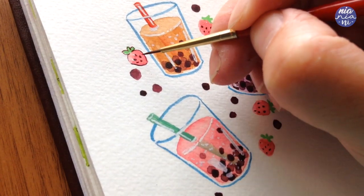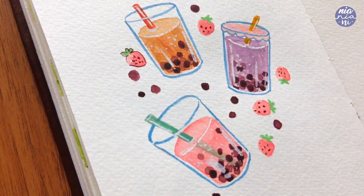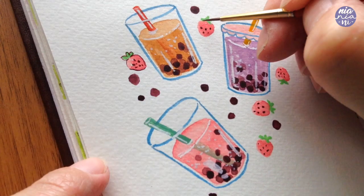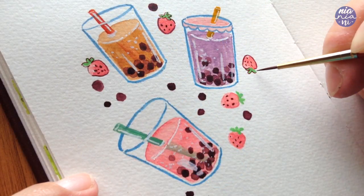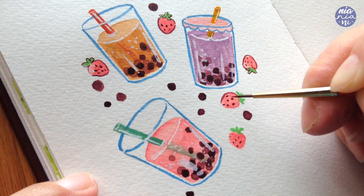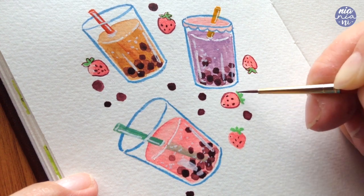And I also finished off with a bit of highlight with white gouache for the strawberries and also for the bobas scattered around the page, just to make them look a little bit more cute and plump.